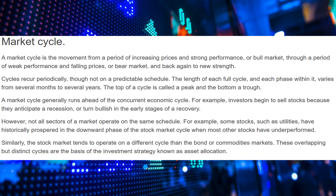A good example would be the 2008 crash, which was over several years. The crash really started in 2008, with a downward trend through 2009, 2010, and really didn't start an upward trend until 2011. But then most recently, last year, we had what they called the flash crash caused by COVID. That only lasted a few months — a downward trend for a few months, floated sideways for a month or so, and then started back on the recovery upward trend. The top of a cycle is called the peak and the bottom the trough. A market cycle generally runs ahead of the concurrent economic cycle. For example, investors begin to sell stocks because they anticipate a recession, or turn bullish in the early stages of a recovery. However, not all sectors of the market operate on the same schedule. Some stocks, such as utilities, have historically prospered in the downward phase of the stock market when most other stocks have underperformed.